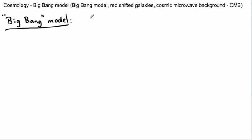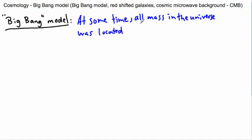The Big Bang Model, or Big Bang Theory, says basically that at some time, all the mass that is in the universe, everything basically, was located in an infinitely small singularity. Singularity means a place where sort of weird stuff happens.